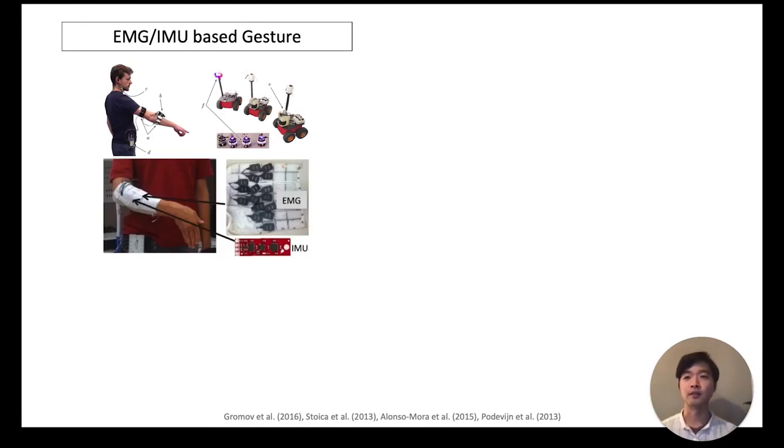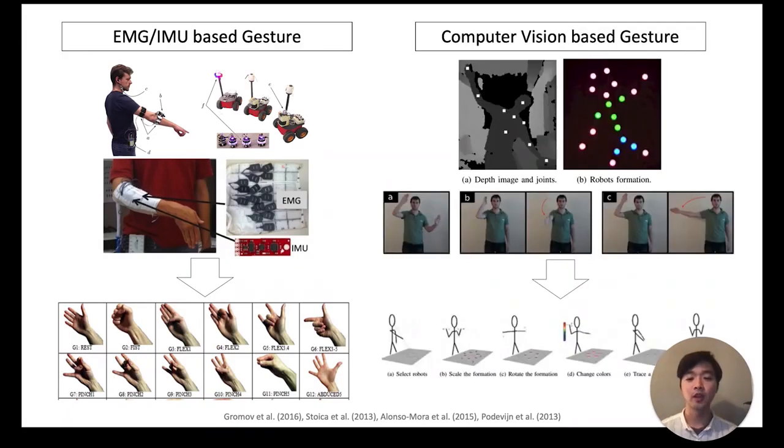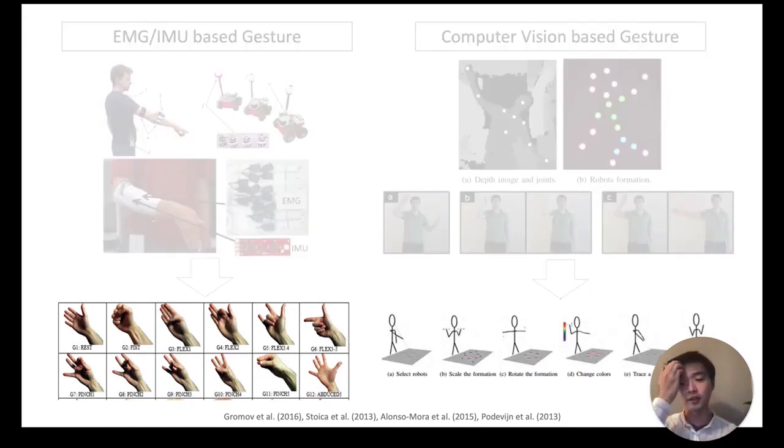Prior work in control of multi-robot systems have mostly explored leveraging gestures. Researchers have used EMG and IMU sensors to detect muscle signals and acceleration of users' forearms to derive hand gestures that could command multi-robot systems. Computer vision has also been used to detect full body posture to control multi-robot systems. However, one problem with both of these is that the resulting command sets are somewhat arbitrary and not very intuitive because they're primarily based on the limitations of the sensor rather than taking into account how users would naturally interact.